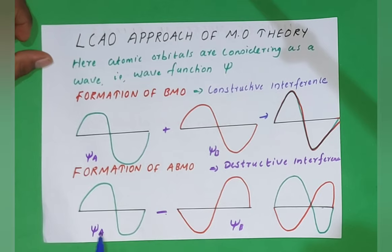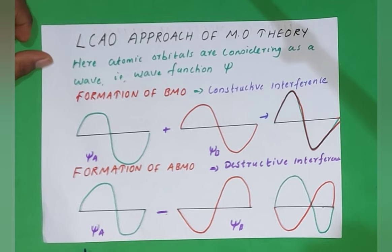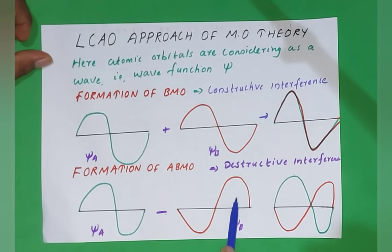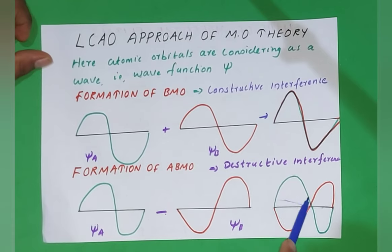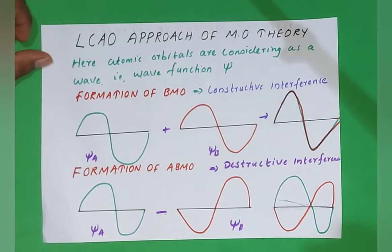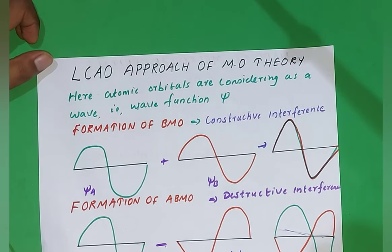In destructive interference, the crest of one atomic orbital and the trough of the other atomic orbital are combining. They cancel each other, meaning the probability is cancelled. This is destructive interference. Constructive interference increases the probability of finding an electron, while destructive interference always creates a node or nodal plane.